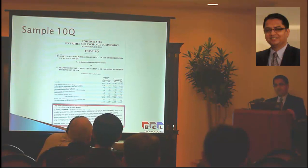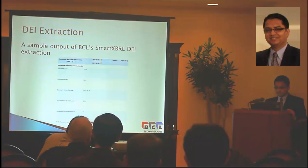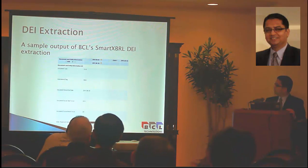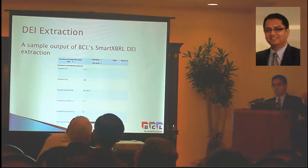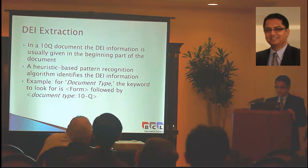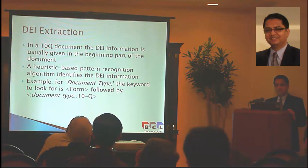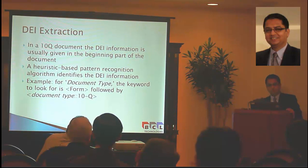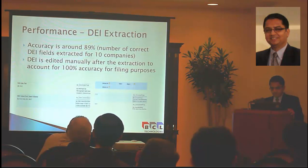The first step is to locate where these items are in a document. For DEI extraction, location is usually given in the beginning part of the document. We use a heuristic-based algorithm that identifies DEI information. For example, if you have a document type, you want to find the keyword to look for its form in the technical file. Performance of DEI extraction is around 98 to 99 percent.